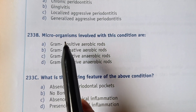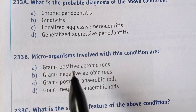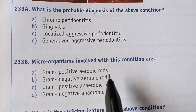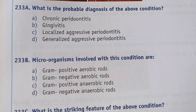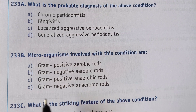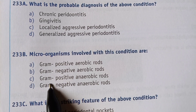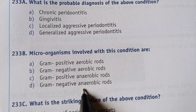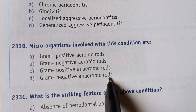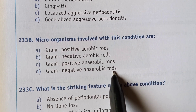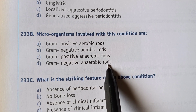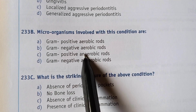Next question: what microorganism is involved in this condition? Options are: A) gram-positive aerobic rods, B) gram-negative aerobic rods, C) gram-positive anaerobic rods, D) gram-negative anaerobic rods. The right answer is option D — gram-negative anaerobic rods. In localized aggressive periodontitis, Actinomycetem comitans involvement is present, which is a gram-negative anaerobic rod.